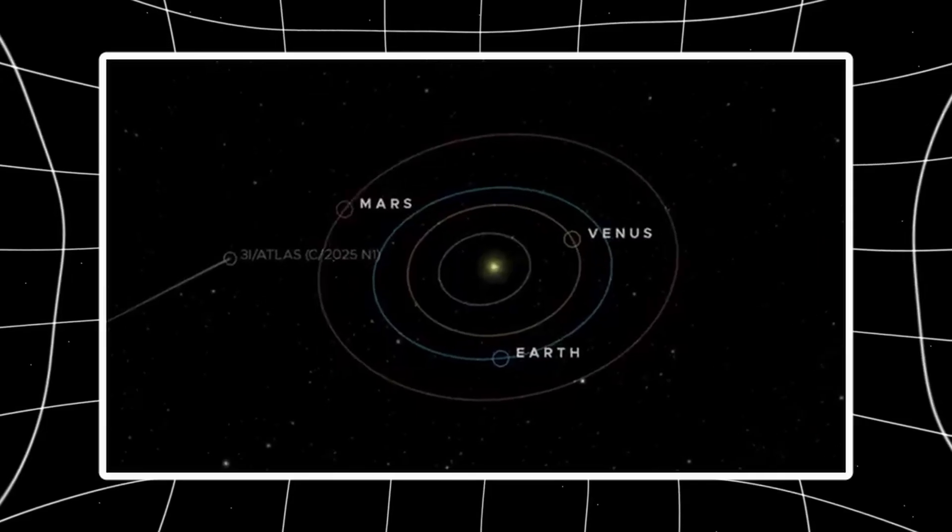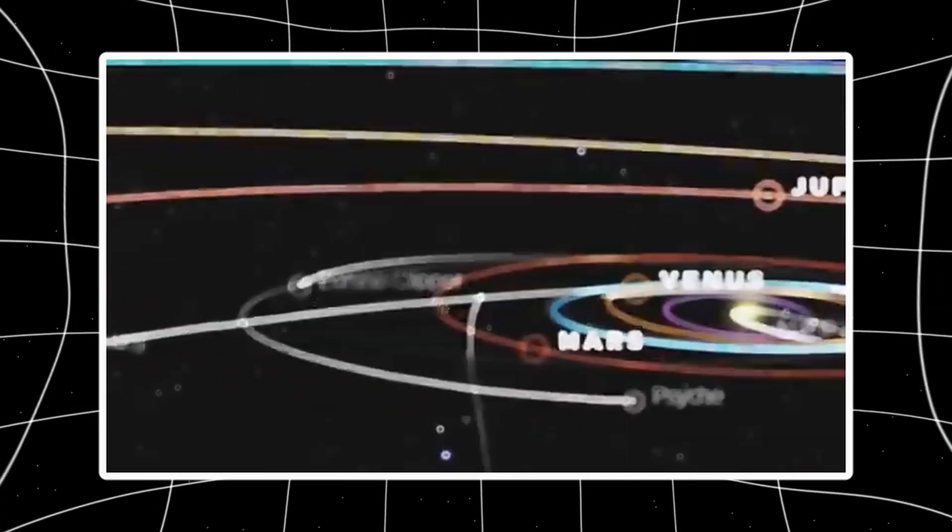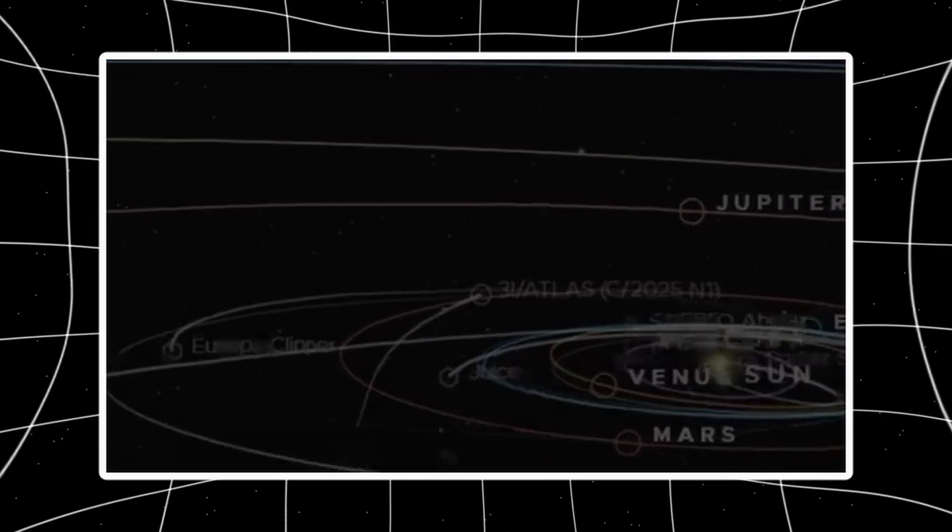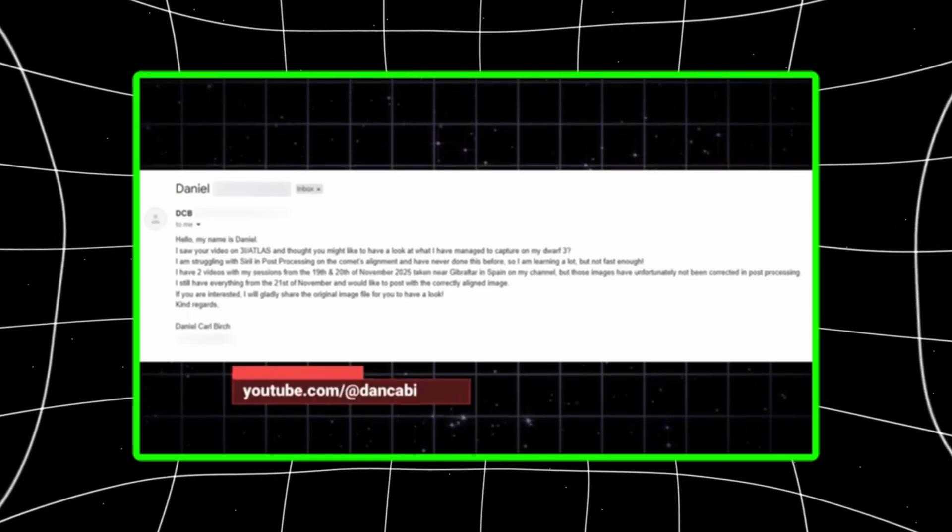Compact glow. Slight asymmetry. Not a point source, so it's not a background star. Matches the structure seen the night before. No flare. No sudden change. Just the same basic geometry confirmed independently.